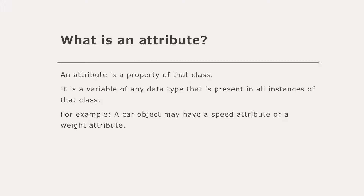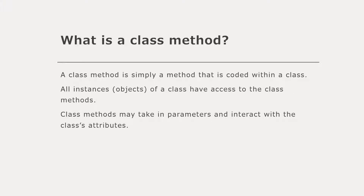The types of attributes are shared between instances of a class, but the individual values those attributes have are unique to each object. A class method is a method coded within the body of a class. All instances of a class have access to the class methods. Class methods are just regular functions — they can take parameters or not, interact with class attributes, and return values or not. They are present in the body of the class, and only the objects of that class have access to the function.